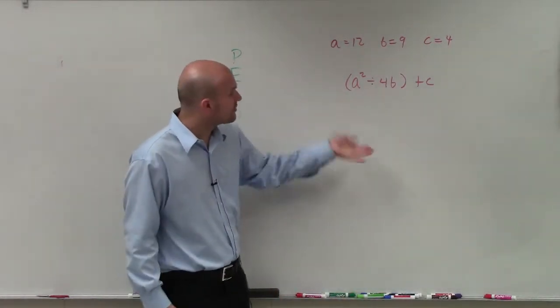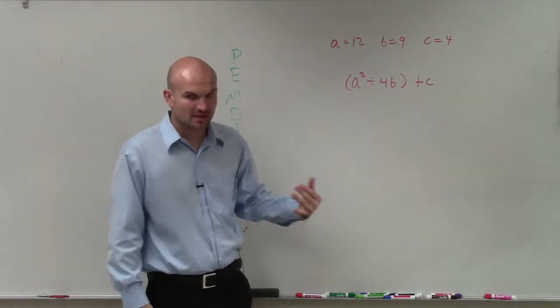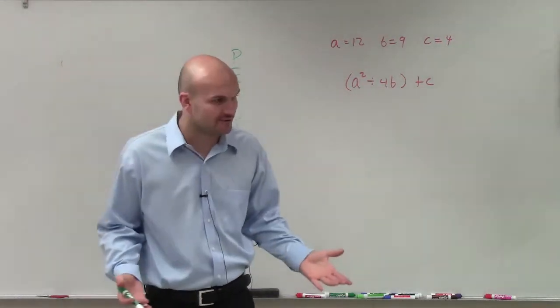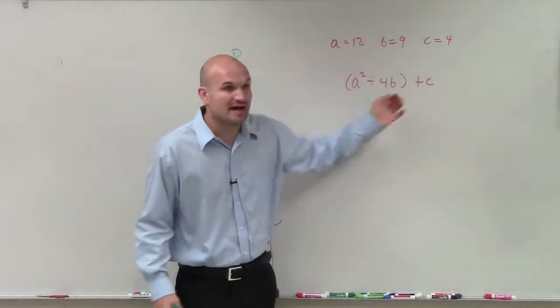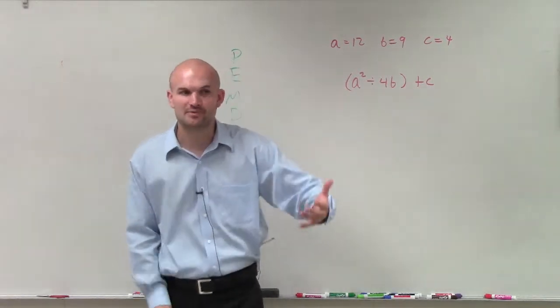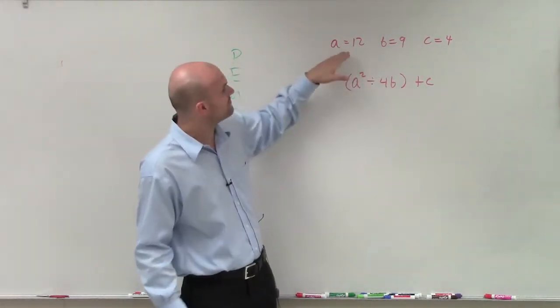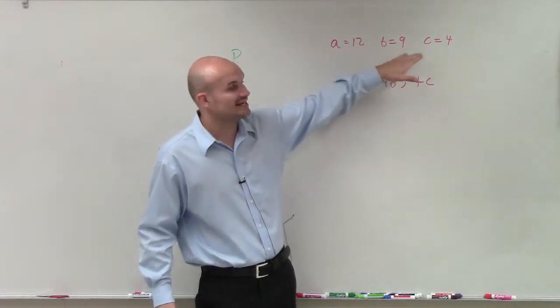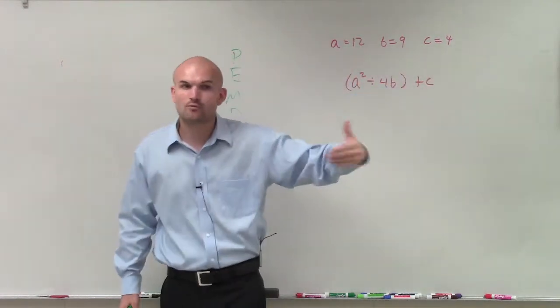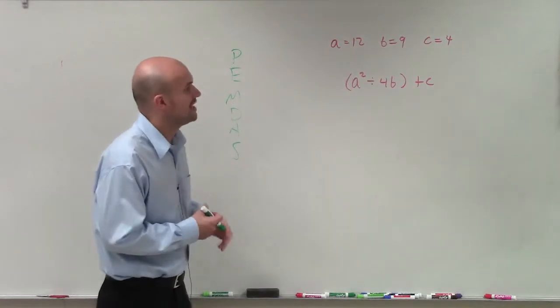So on this one, what we have is the expression a squared divided by 4b plus c. Well, we can't simplify this any further where it's at because we don't know the values of a, b, and c. But on the problem, on the initial description, they say, all right, well, what about if a equaled 12, b equaled 9, and c equals 4? Then what would be the value of the expression?